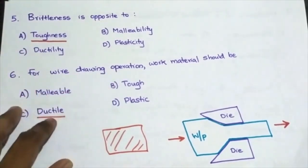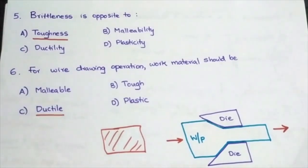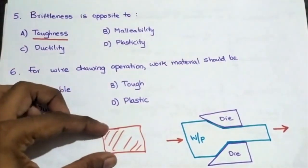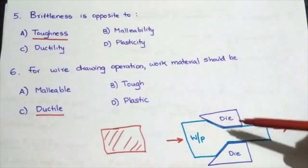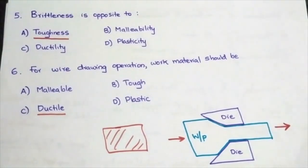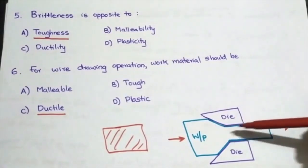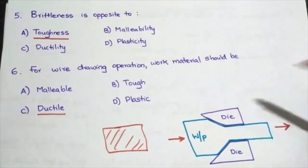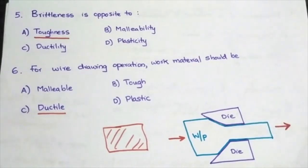For a wire drawing operation, the work material should be — malleable, tough, ductile, or plastic? In wire drawing, the workpiece is drawn through a die such that its cross-sectional area is reduced and length is increased, with a tensile force applied along the drawing direction. For this operation the material should be ductile, so the answer is ductile.